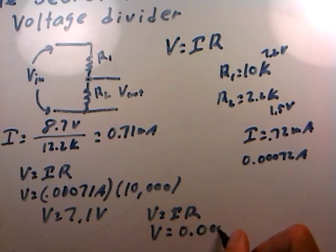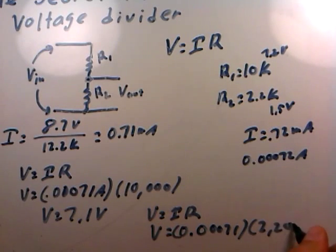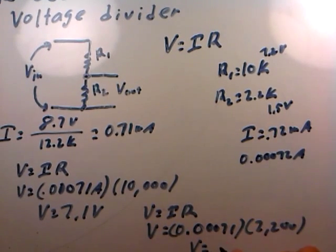0.00071 amps again. If I multiply that by the 2200 ohm resistor, multiplying it out on my calculator, I get that the voltage drop across that is about 1.56 volts.